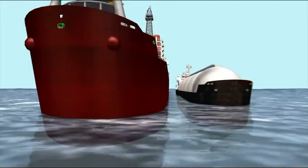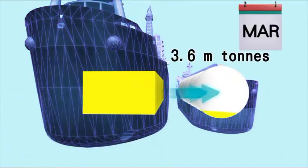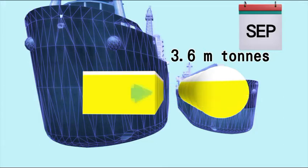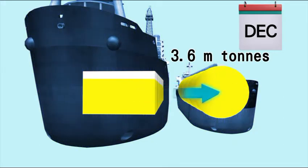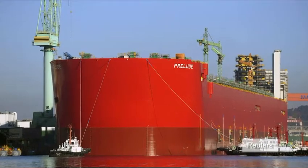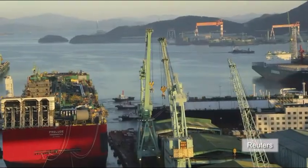Prelude will produce approximately 3.6 million tons of LNG a year, which will be sent to shore on LNG carrying tankers. Shell has already started working on building an even bigger facility.